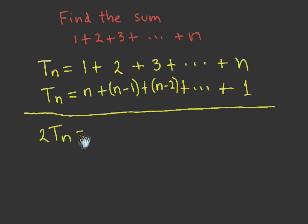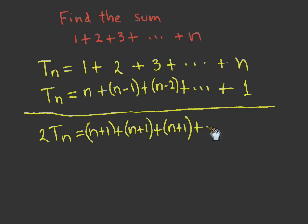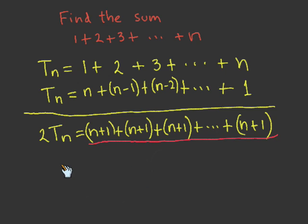If we add these two equalities, we get 2 times t sub n equal n plus 1 plus n plus 1, and all of the terms are n plus 1. As in Gauss's solution, we find again that adding a number from the beginning of the sequence to one from the end gives a constant sum. The right-hand side is easy to compute: we have n of those terms, therefore t sub n equals n times n plus 1 over 2.